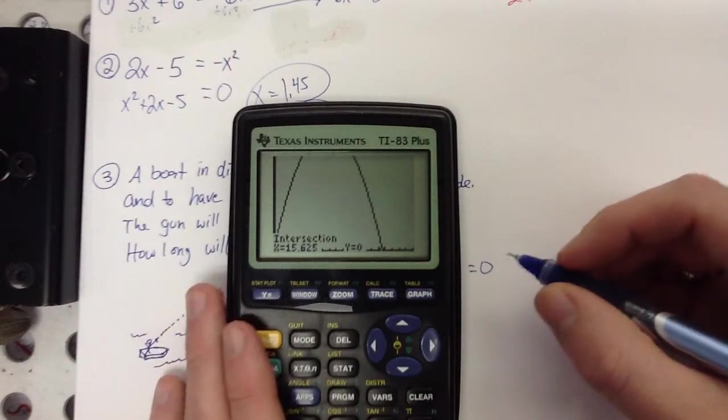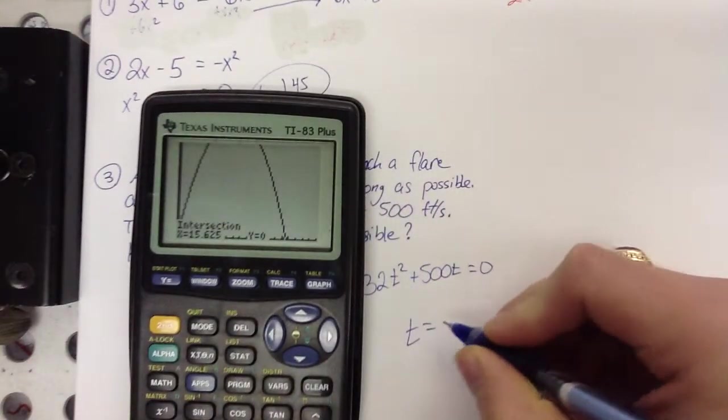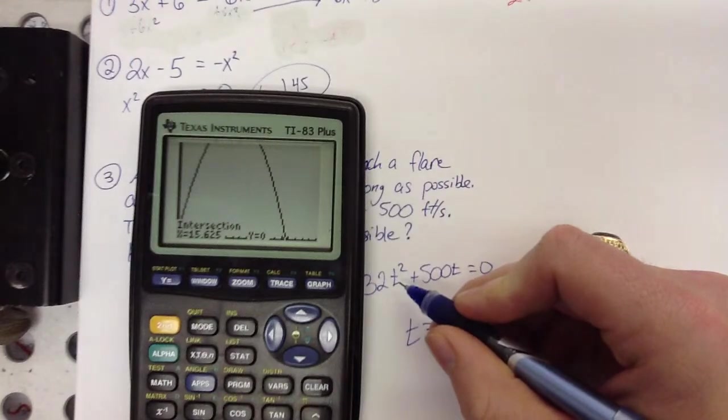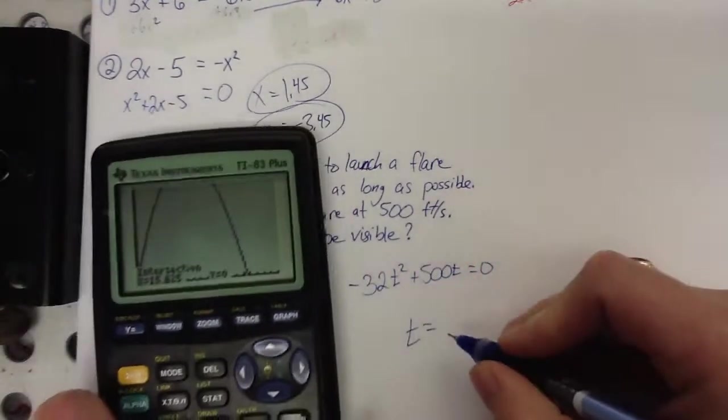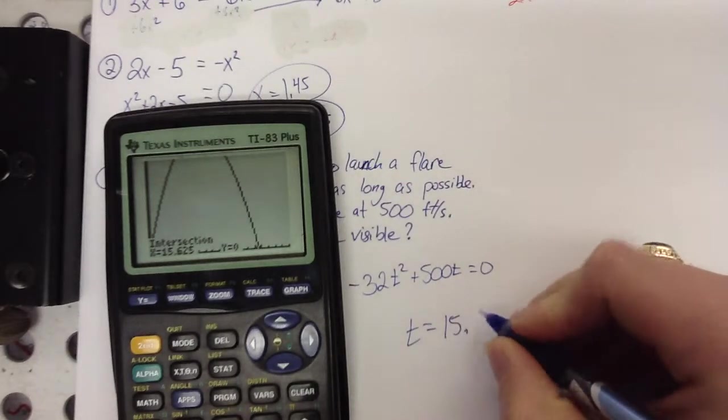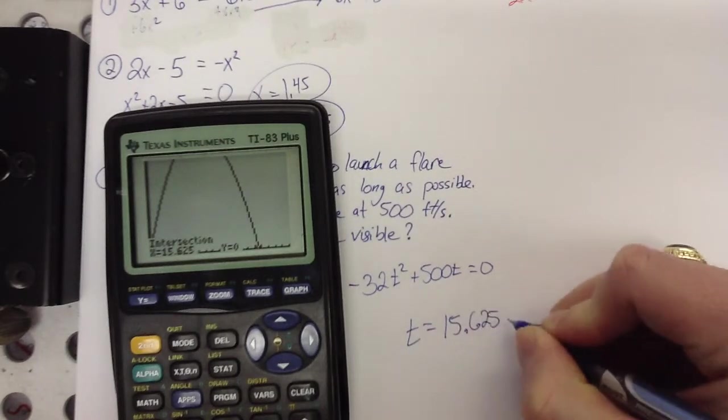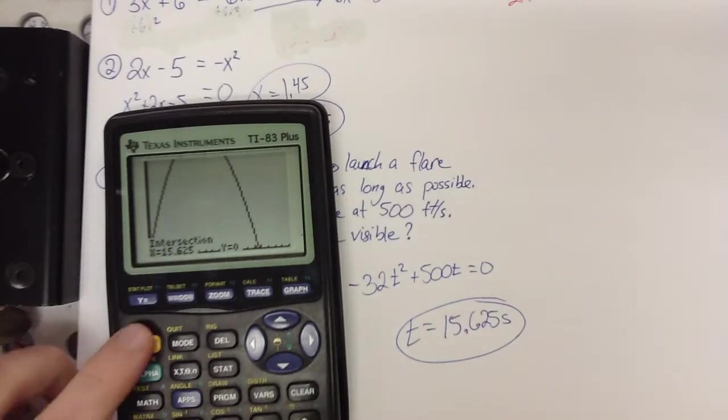All right. That's a real precise decimal. So I'm going to go with the whole thing. So the time it takes, now I'm using T because I'm talking about time. That was the question, right? How long will the flare be visible? Hopefully, you know, length of time is time. 15.625 seconds. So that's how long I've got for the barge to spot me before that flare goes out. Alright. Hope that's helpful. See you in class tomorrow. Thank you.